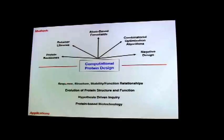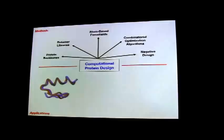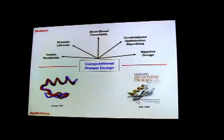You can use these methods to ask questions about the relationship of sequence, function, and stability, think about evolution of protein function, and make interesting molecules. Historically, we showed back in 1997 that you can actually do this and it works. We took a zinc finger fold, stripped off all the side chains, removed the requirement for zinc binding, and designed a novel sequence that folds to the target structure.